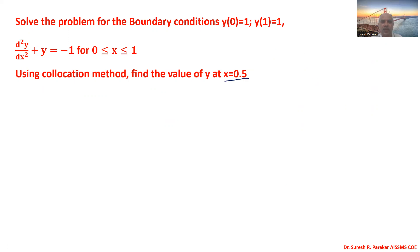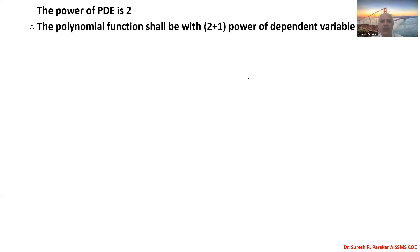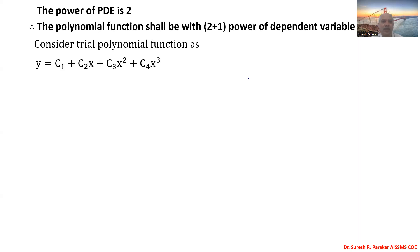Since the power of the differential equation is 2, we have a trial polynomial of degree 2+1 = 3. So we consider the trial polynomial function as y = c1 + c2·x + c3·x² + c4·x³, because we require degree 3.